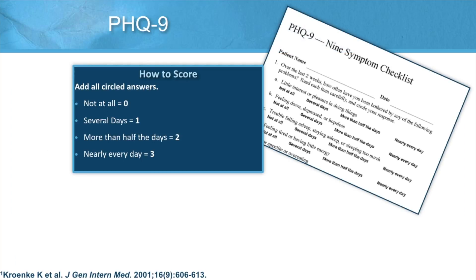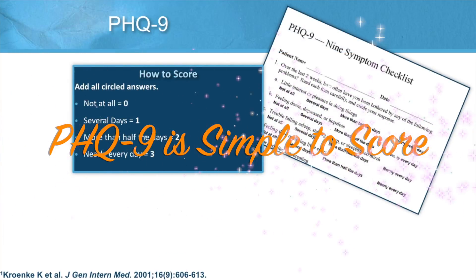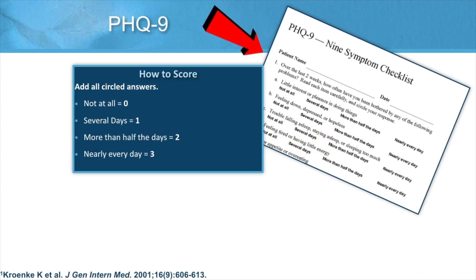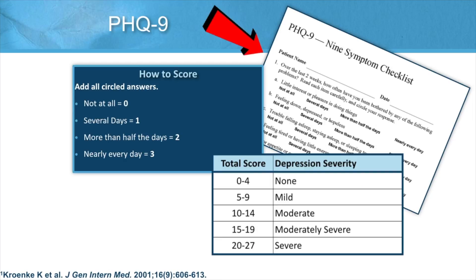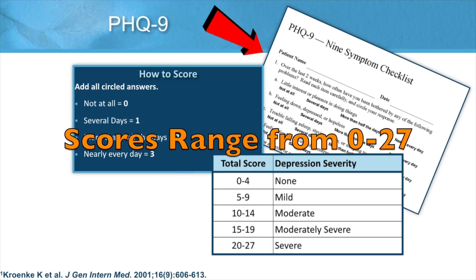Scoring is absolutely simple. Patients are asked, over the last two weeks, how often have you been bothered by any of the following problems? Answer choices include: not at all, several days, more than half the days, and nearly every day. A numerical value is attached to each. Scoring requires that we add up the values and then refer to the depression severity chart, which helps us better understand our patient's depression. Scores range from 0 to 27.